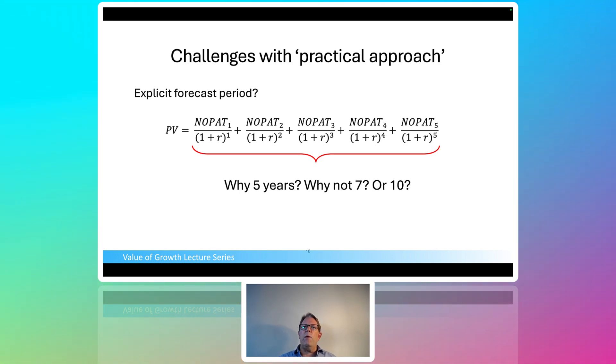And one of the first questions I always ask in my class, and I rarely get a good answer, is why five years? Why is the explicit forecast period, most of the example, is five years? I will get answers. They're just not very good answers. My answer is because there's five fingers on a hand, which usually elicits a few snickers from the students. But the other answers aren't much better, frankly.